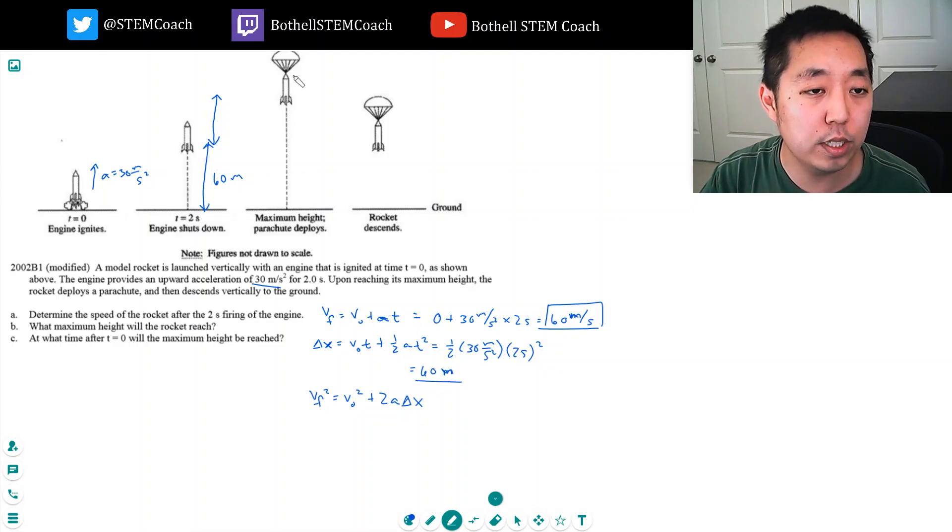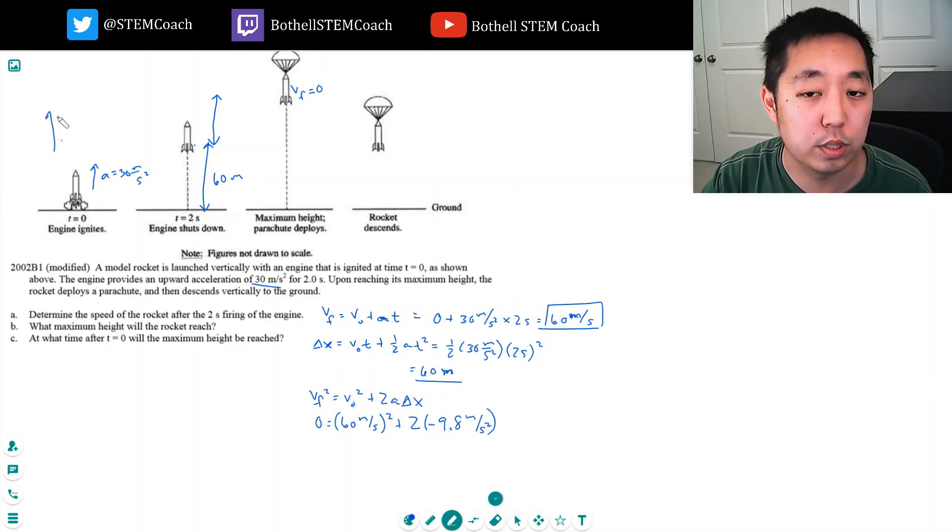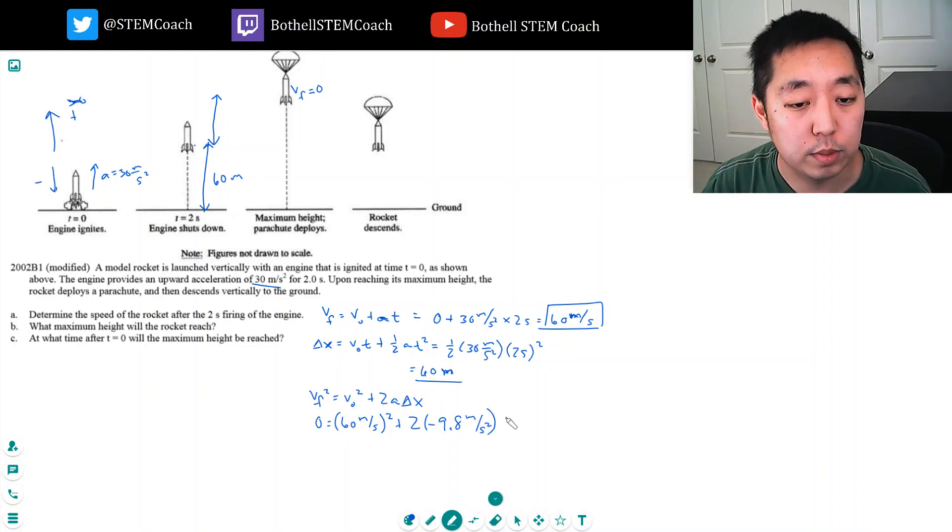VF squared, well when he reaches the maximum height his final velocity is zero. His initial velocity is the velocity here, because I'm doing this from here to here time-wise, from here to here. So his initial velocity is the velocity at this moment, which we solved in part A, which was 60 meters per second. And then plus 2 times, now he's subject to acceleration, just gravity. That's minus 9.8 meters per second squared. Because in this orientation I said up was positive, up is positive, down is negative, times delta X.